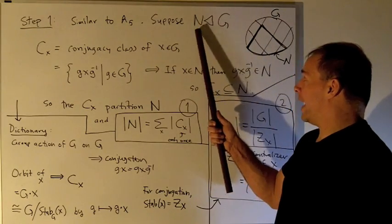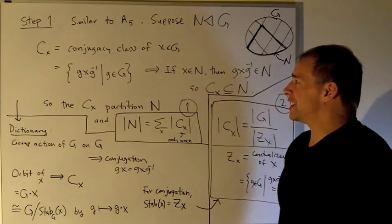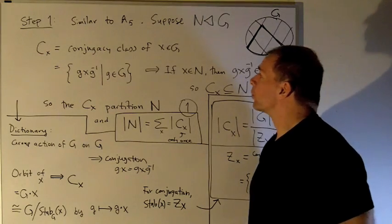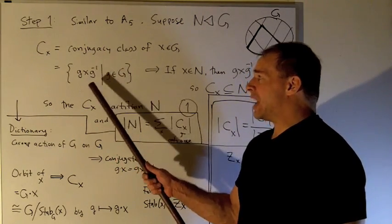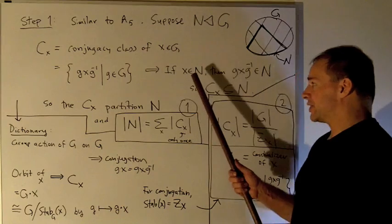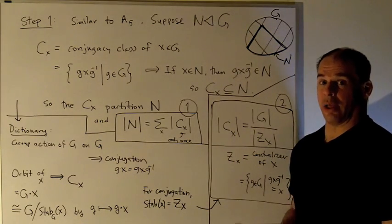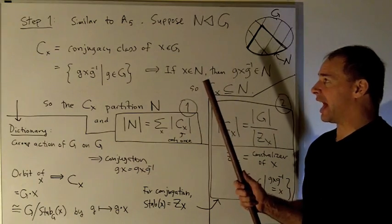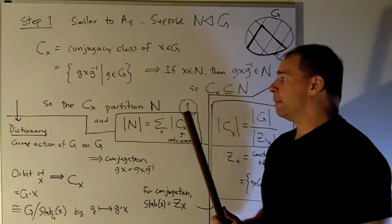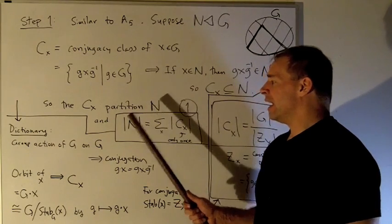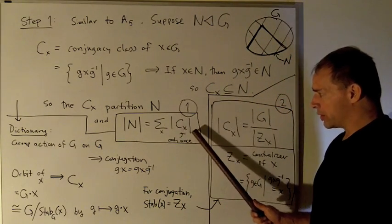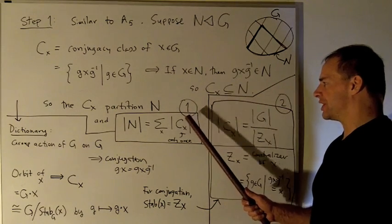So let's review. I have my normal subgroup N inside of G. We're going to consider the conjugacy classes of X inside of G for a fixed element X. So if it helps, suppose X is inside of N. By definition, we're going to take all conjugates of X when we conjugate by G inside the big group G. Since X is inside the normal group N, when I conjugate, I get another element inside of N, which means the whole entire conjugacy class winds up falling inside of N also.